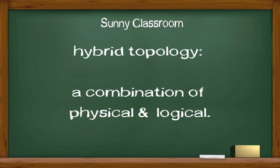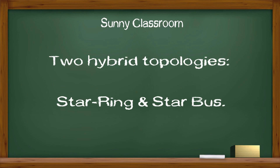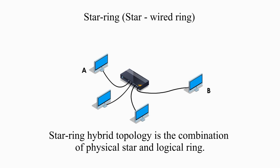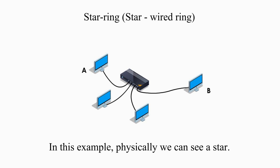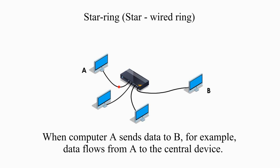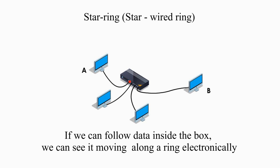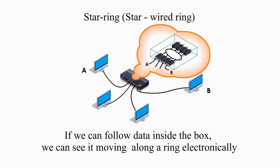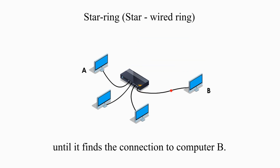Now let's talk about hybrid topology, a combination of physical topology and logical topology. We focus on two hybrid topologies: star-ring and star-bus. Star-ring hybrid topology is the combination of physical star and logical ring. Physically we can see a star. Logically, data flows inside the central device — when computer A sends data to B, data flows from A to the central device and moves along a ring electronically until it finds the connection to computer B.